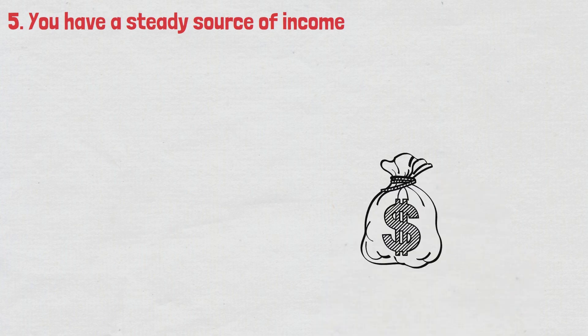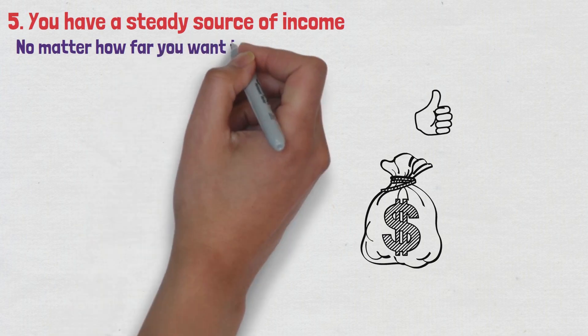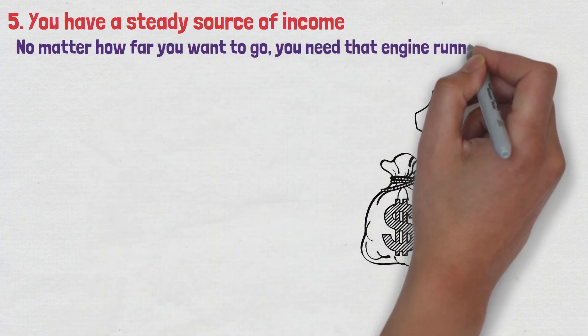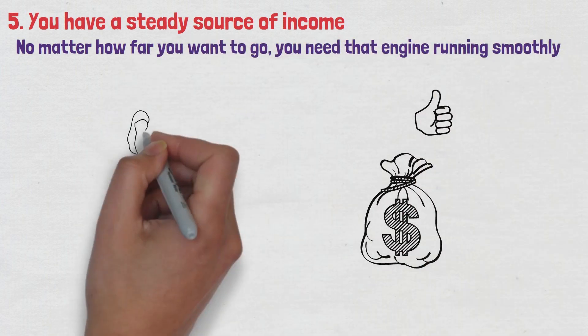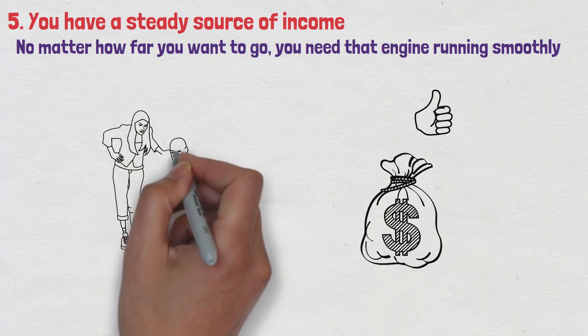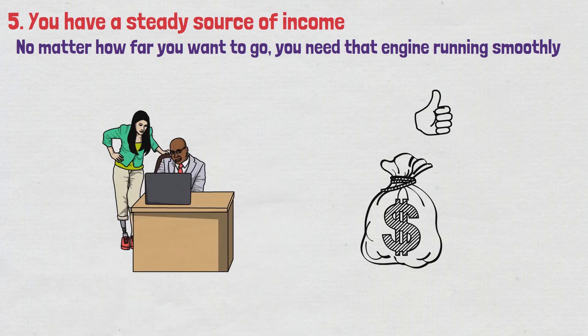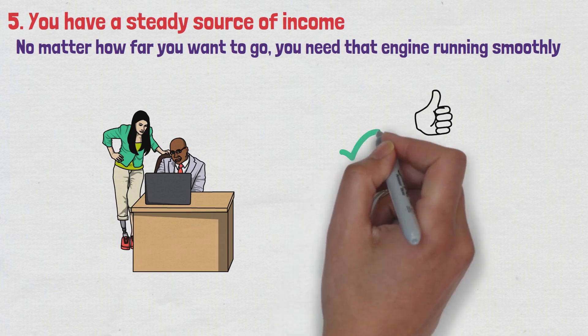Number five, you have a steady source of income. Having a steady income is like having a reliable engine in your car. No matter how far you want to go, you need that engine running smoothly. Whether you're doing a job, running a business, or freelancing, a regular source of income is what can keep you financially stable.